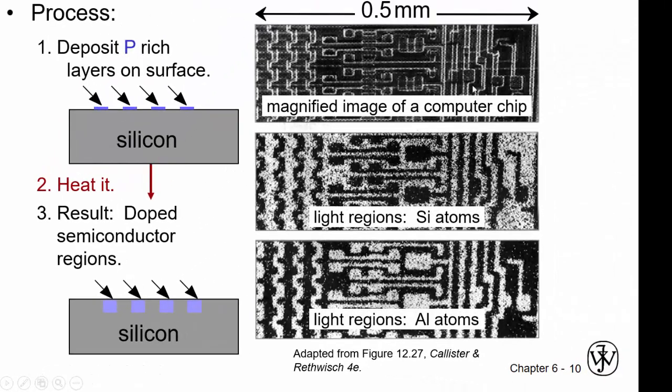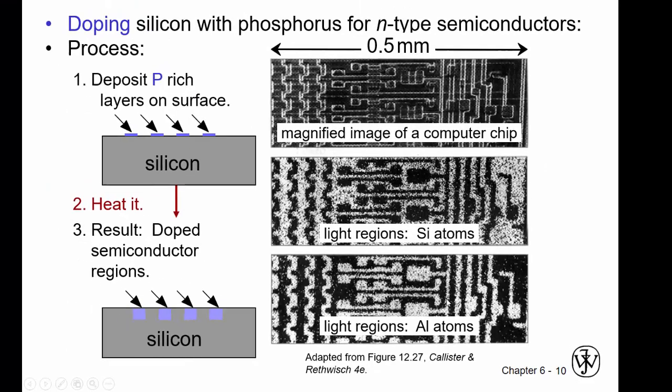Looking at this image we have just the computer chip itself but showing appropriate contrast we can see the silicon atoms and then here we see aluminum atoms that are placed down in a similar fashion as the phosphorus but these are probably connecting the different transistors from one to the next.